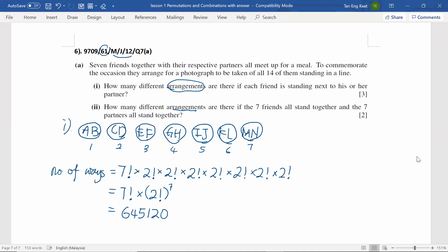To answer part two, the seven friends stand together. So, A, C, E, G, I, K, and M. So, seven friends stand together. So, I group them. And their partners, B, D, F, H, J, L, N stand together. So, I circle them, group them. Now, you can tell effectively they are two big groups of friends being arranged.